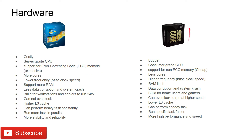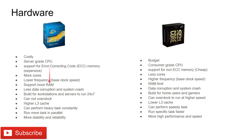Xeon processors come with more cores compared to Core processors, which have fewer cores. Keep this in mind: if you want to do multi-core processing work, Xeon is the one to choose. On the other hand, if you are using a single-threaded or single-core application, Core i9 is really good. Intel Xeon processors also come with a lower base clock speed — for example, 2.5 GHz or 3.5 GHz — whereas Core processors have a higher base clock speed.